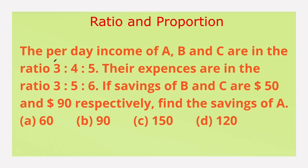Next question: the per day income of A, B and C are in the ratio 3:4:5. Their expenses are in the ratio 3:5:6. If savings of B and C are $50 and $90 respectively, find the savings of A. Options: A 60, B 90, C 150, D 120.